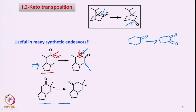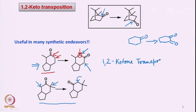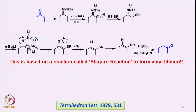Similarly, there is another example where if you have blocked the alpha position of the carbonyl group, then we can convert this ketone to the next carbon atom, and once that is done one can also functionalize the position next to the carbonyl group. So this is called 1,2-ketone transposition. There are of course several methods, but we will take one or two methods using sulfur-based or selenium-based chemistry.